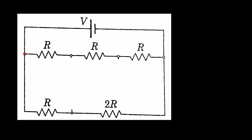So let me quickly write this: P will be at plus V volt. This is S, which is at two V by three volt. How do we know that this will be at two V by three volt? Because the voltage drop should be V by three. So V minus two V by three is V by three. So two V by three minus V by three would be the potential at this point — naming it as T — so it is V by three. And from T to the point Q, the voltage drop should be V by three, which is evident just by looking at it. So this is plus V by three.